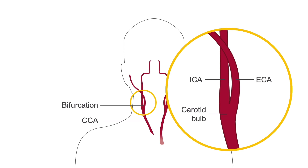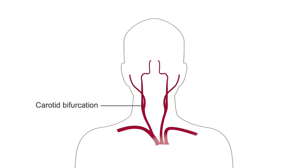The ECA is typically anterior and medial to the ICA at its origin, and has multiple extracranial branches. It is important to know that the level of the carotid bifurcation is variable, but it is typically located at the angle of the mandible, or lower jaw.